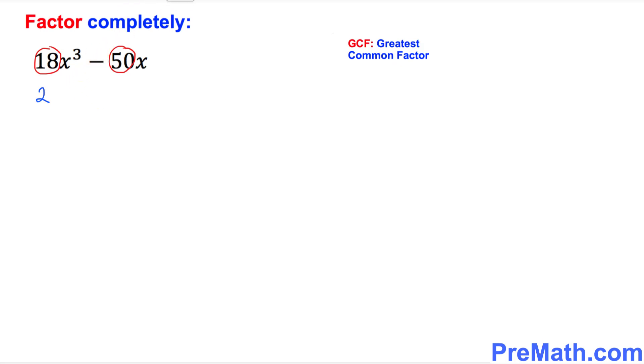Now I want you to focus on these x variables: x power 3 and here x. If you look at what is in common here, the GCF is going to be simply x. So I want you to just put down x. So our complete GCF turns out to be simply 2x. This could be factored out.